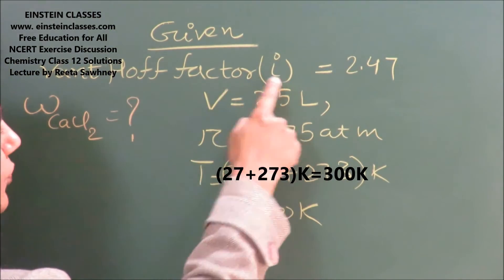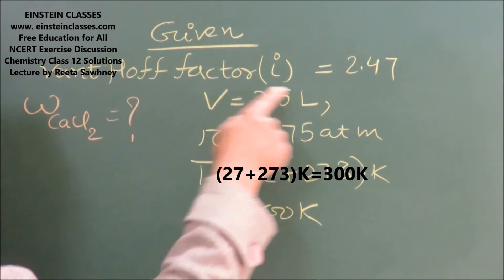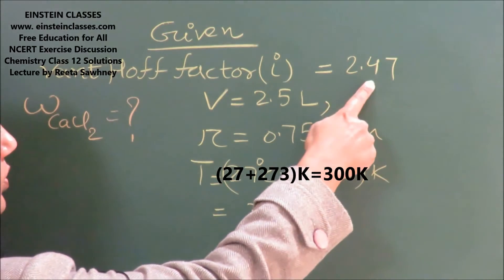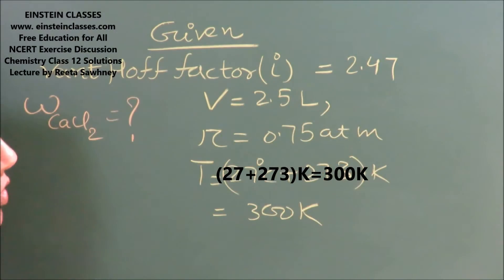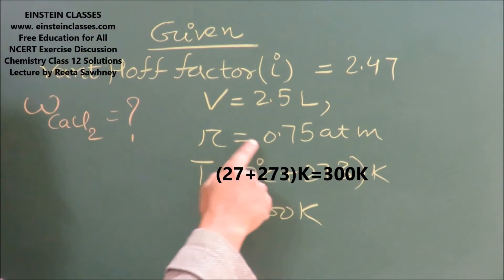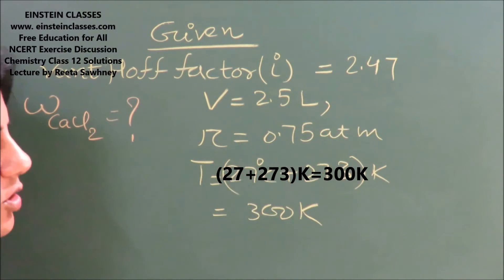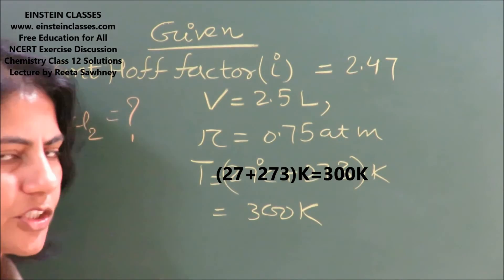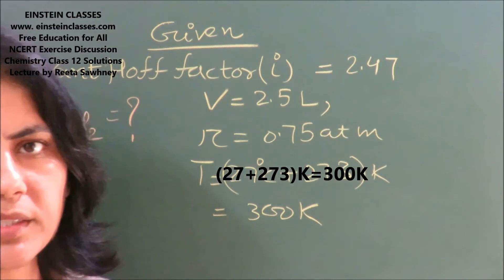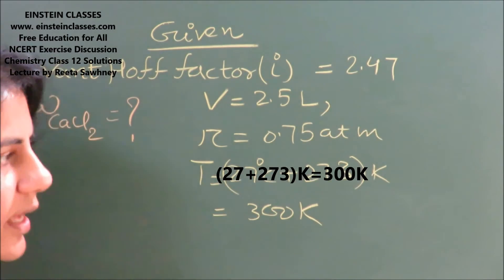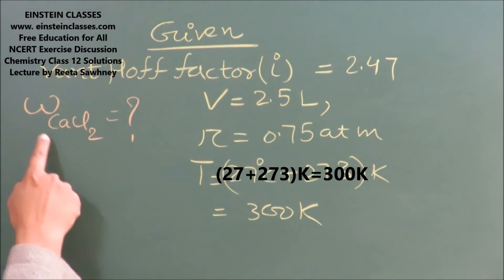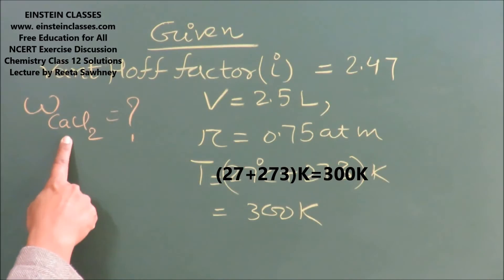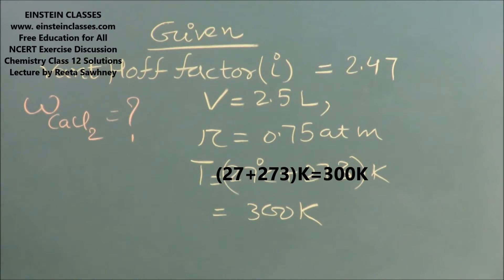The van't Hoff factor i for calcium chloride is 2.47, the volume of solution is 2.5 liters, osmotic pressure is 0.75 atm, and the temperature is 300 Kelvin. Our aim is to find out the amount of calcium chloride added to the water.